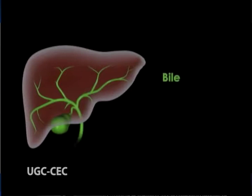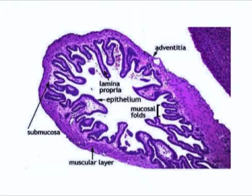It receives and stores bile from the liver via the hepatic and then cystic duct and can store about 50 to 100 ml in humans. It is attached to the visceral layer of the liver. The contractions expel bile into the common bile duct and the bile is then carried to the duodenum. The inner surface of the gall bladder is covered by the mucosa, and the surface is made up of a columnar epithelium. The epithelial cells have microvilli and look like absorptive cells in the intestine.